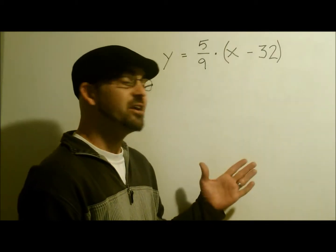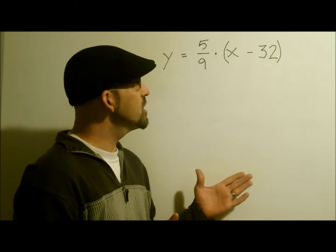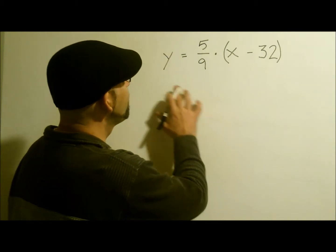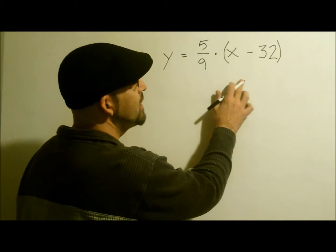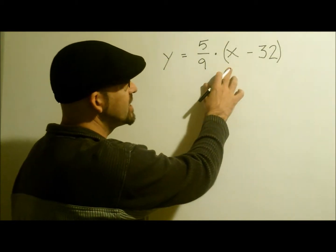We can solve any linear equations by just following the rules of equality. Here we have y equals 5 ninths times x minus 32. I want to solve for x.